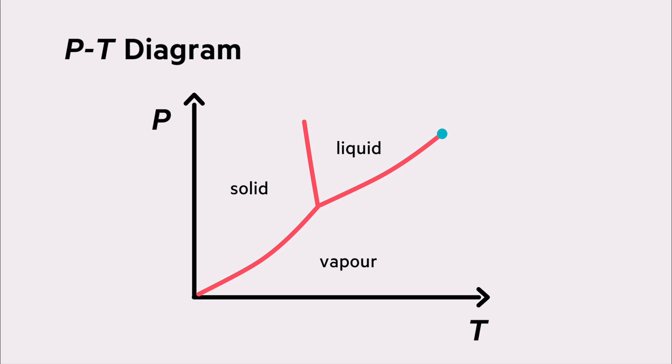Sublimation occurs when the substance crosses the sublimation line from here to here. The other way around, the desublimation or deposition happens when the substance goes from the vapor phase directly into the solid phase.